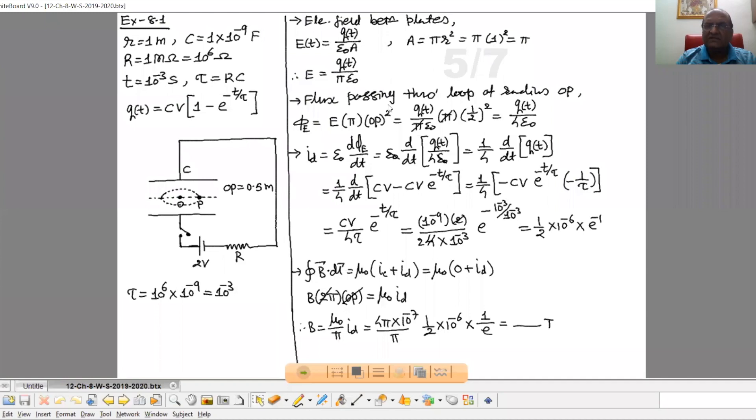Now flux passing through the loop of radius OP. So phi E is E into pi radius square, radius of that loop that is OP. So pi OP square. So E is Q upon pi epsilon 0 into pi radius, that is half means OP that is half square of it. So you will get flux passing through the loop that is Q upon 4 epsilon 0.